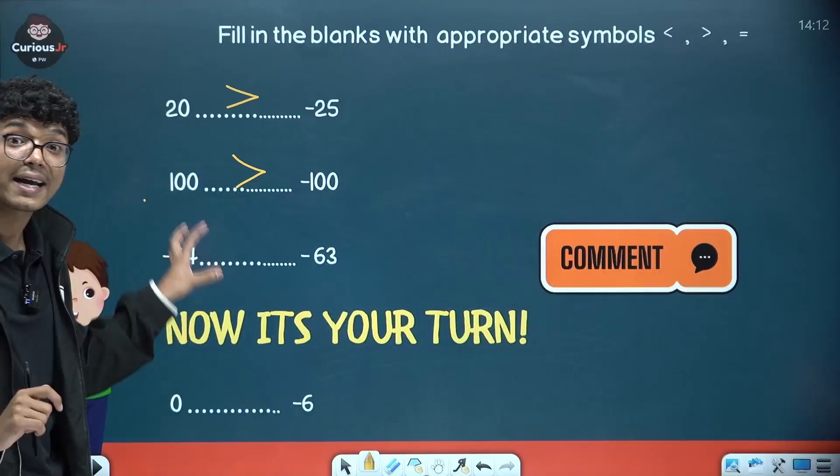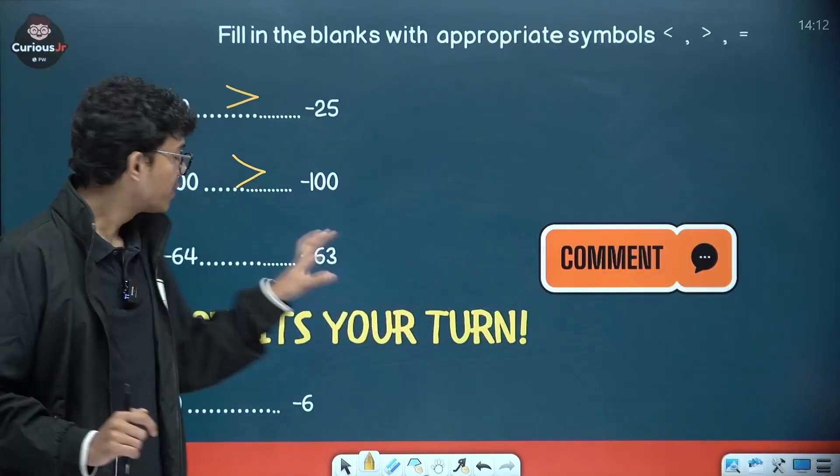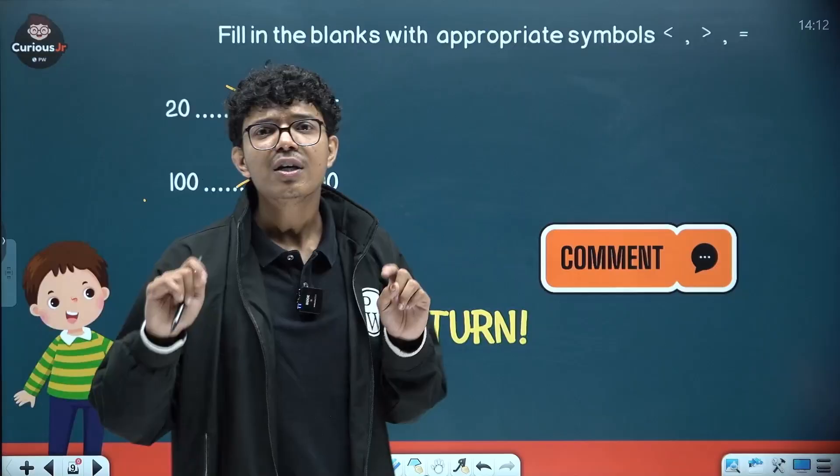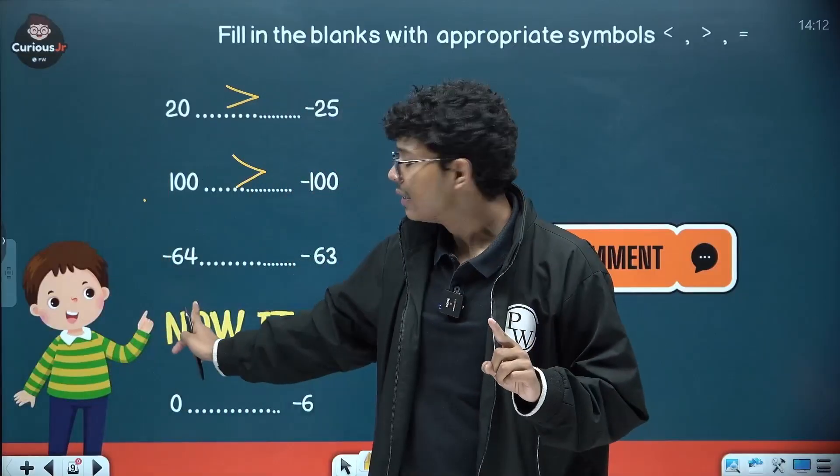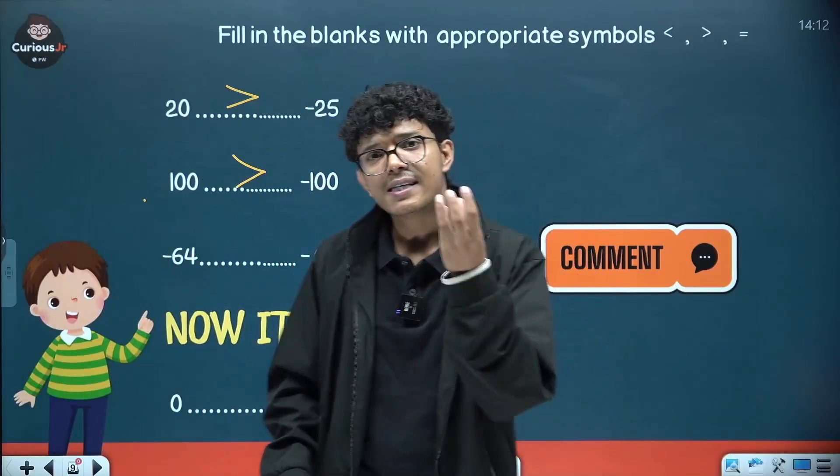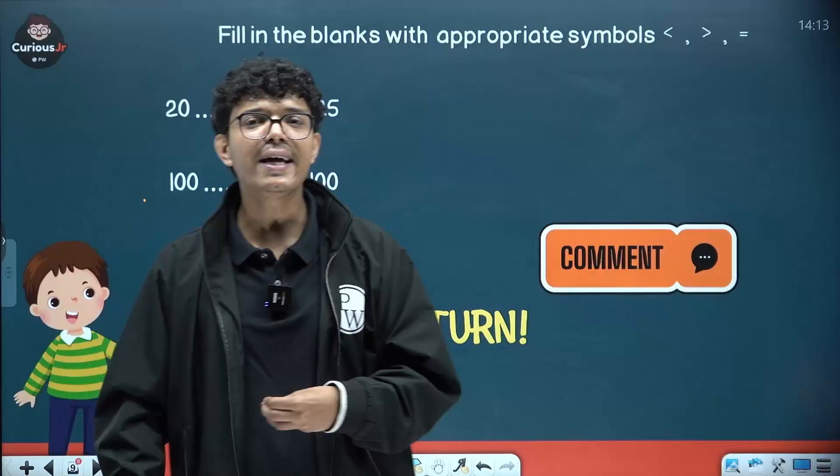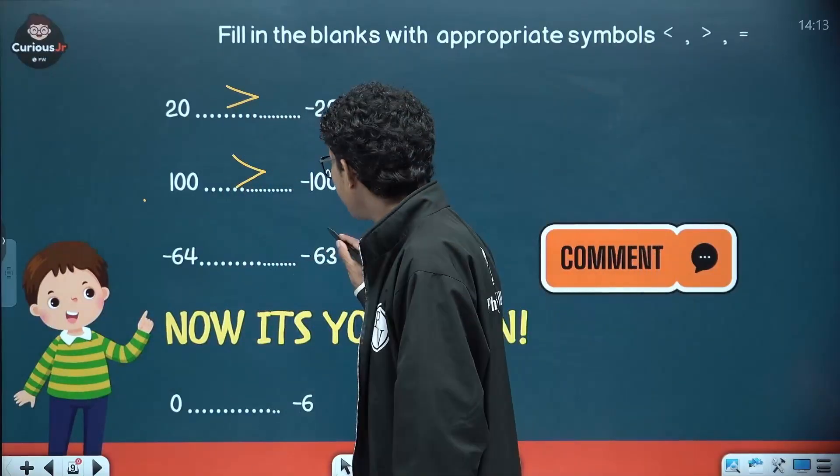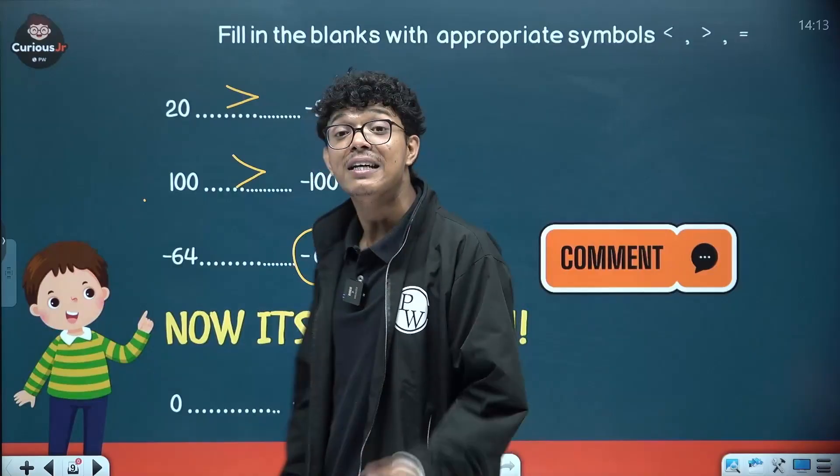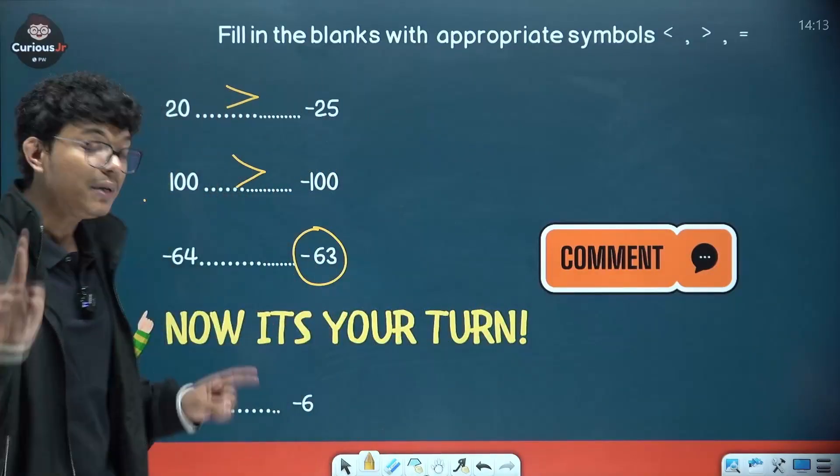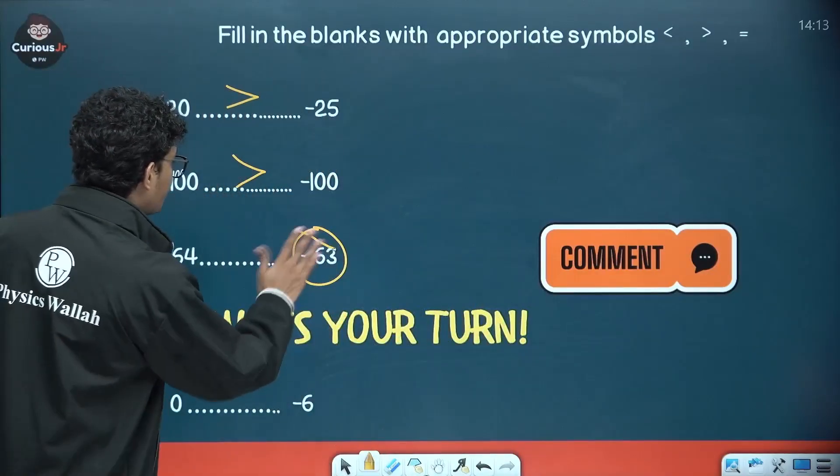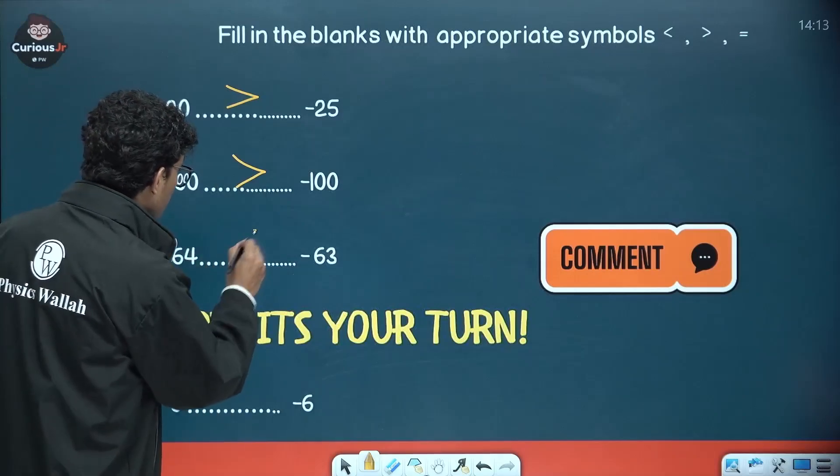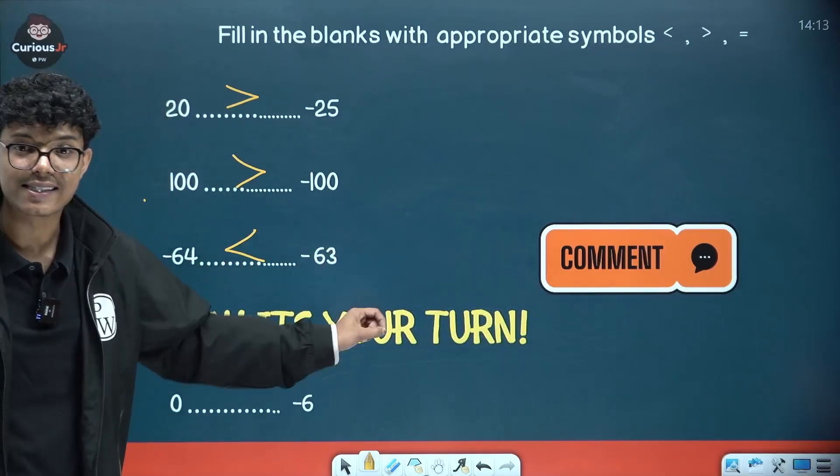Now here comes the tricky one. Minus negative numbers we have to compare. Minus 64 and minus 63. So zara which number here is closer to 0? Minus 63 closer to 0 hai ya phir minus 64 closer to 0 hai? Well well well very good. Minus 63 is closer to 0. That means minus 64 is what? Minus 64 is smaller than minus 63.